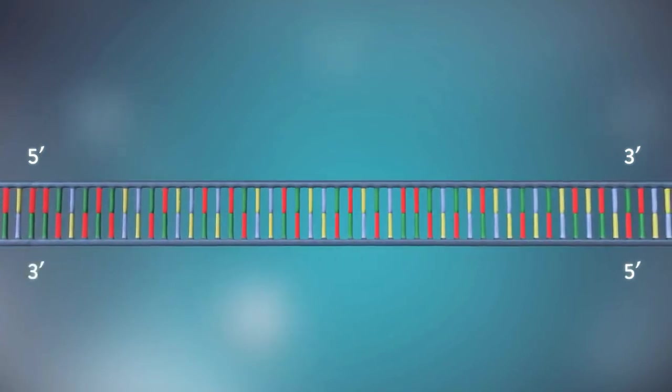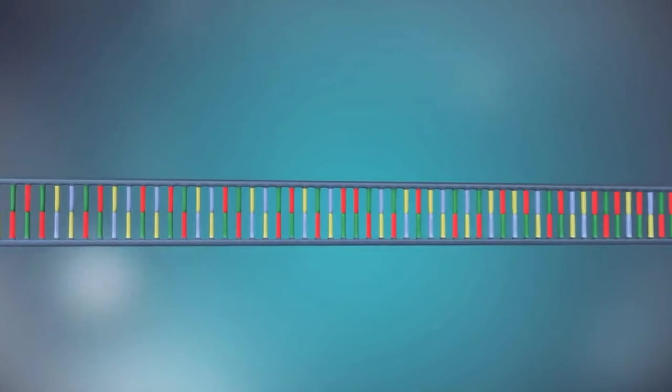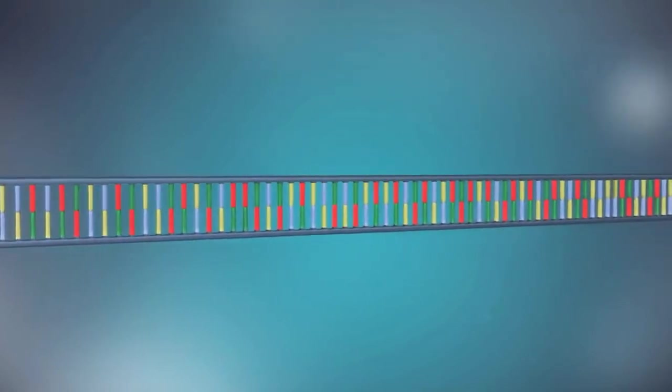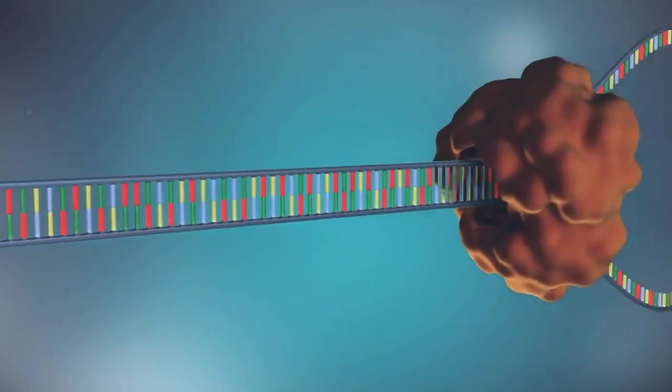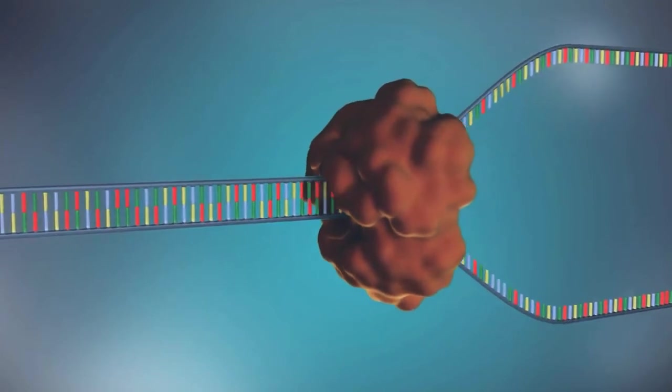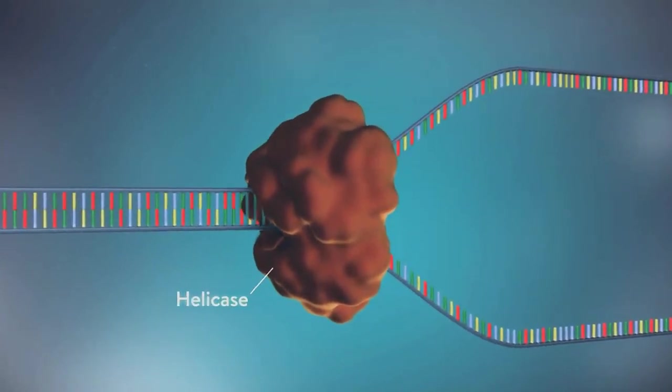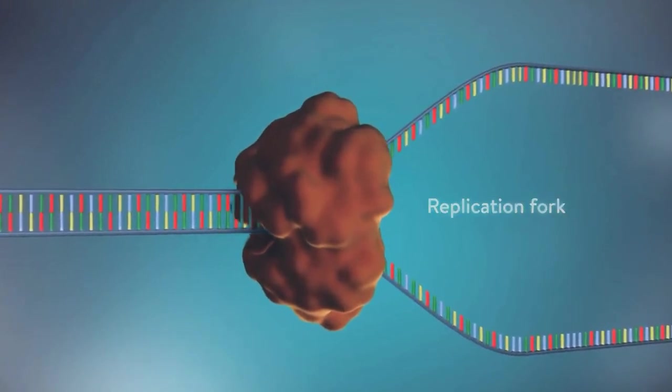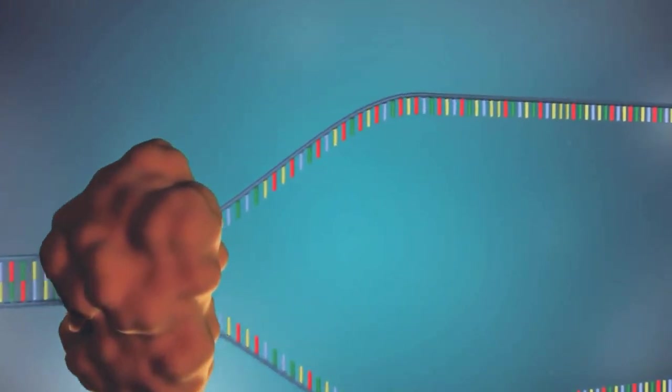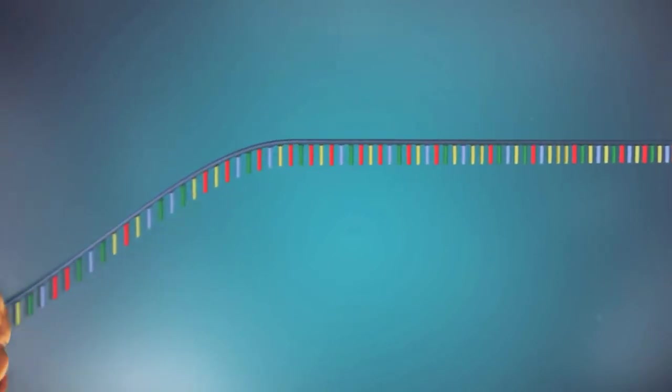The first step in DNA replication is to separate the two strands. This unzipping is done by an enzyme called helicase and results in the formation of a replication fork. The separated strands each provide a template for creating a new strand of DNA.